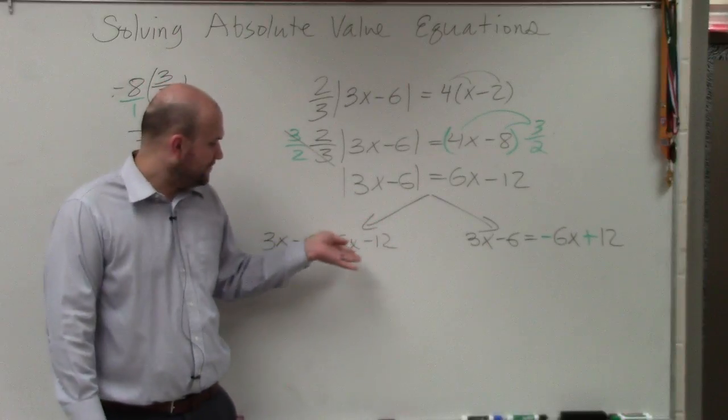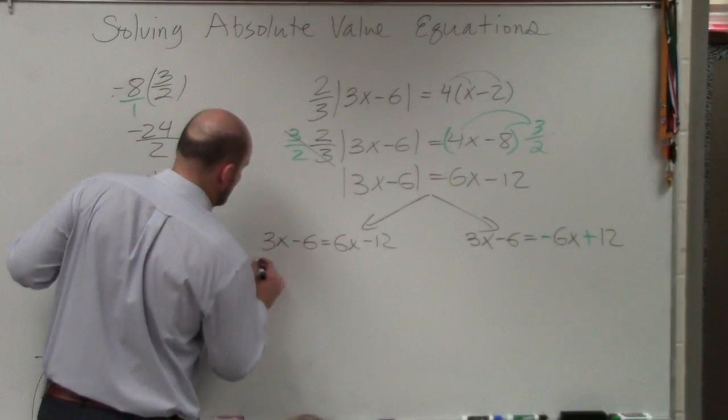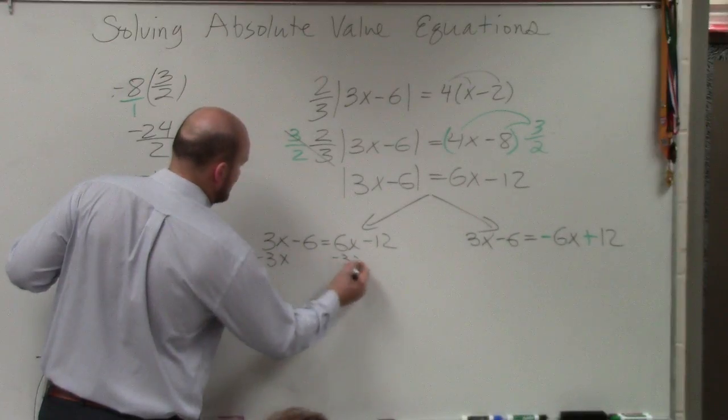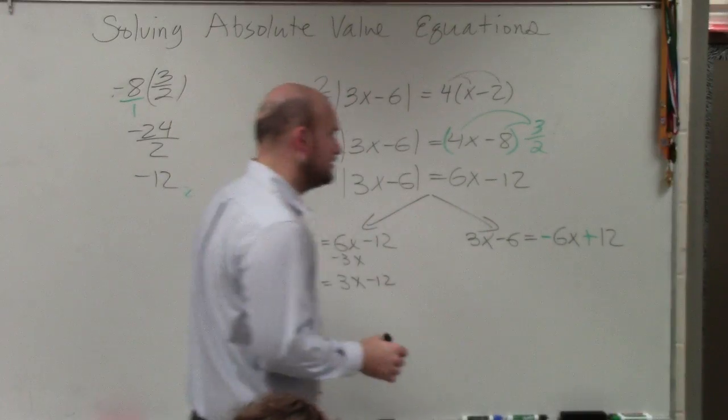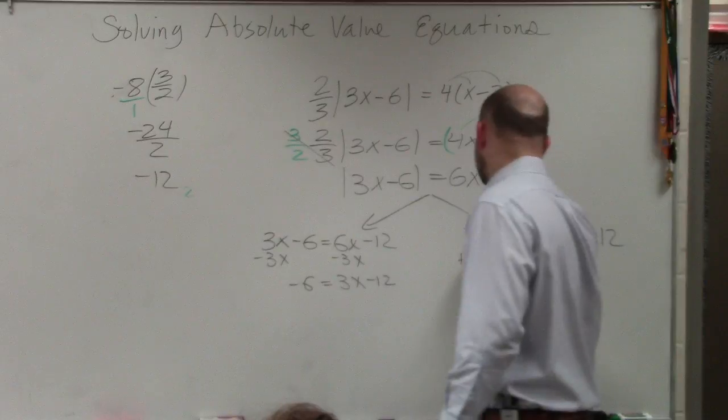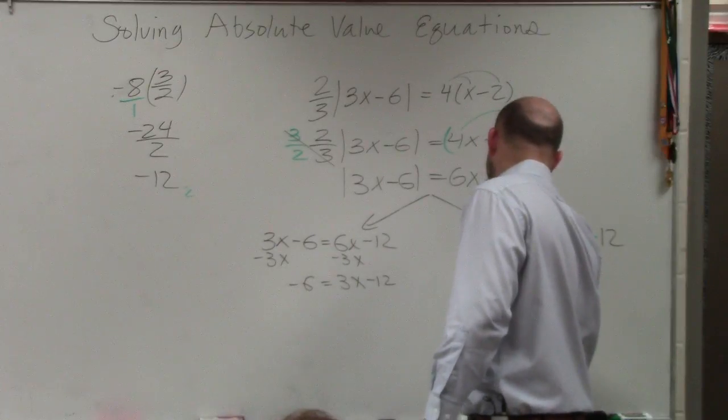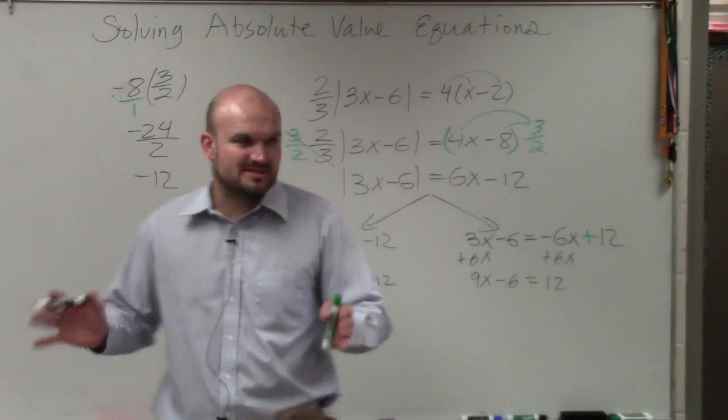So now we've got to solve, but we've got to get the variables to the same side. So I'll subtract the 3x. I'm left with negative 6 equals 3x minus 12. Over here, I'm going to add a 6x to both sides. So I get 9x minus 6 equals 12. Do you guys see why it was different, how I solved it?